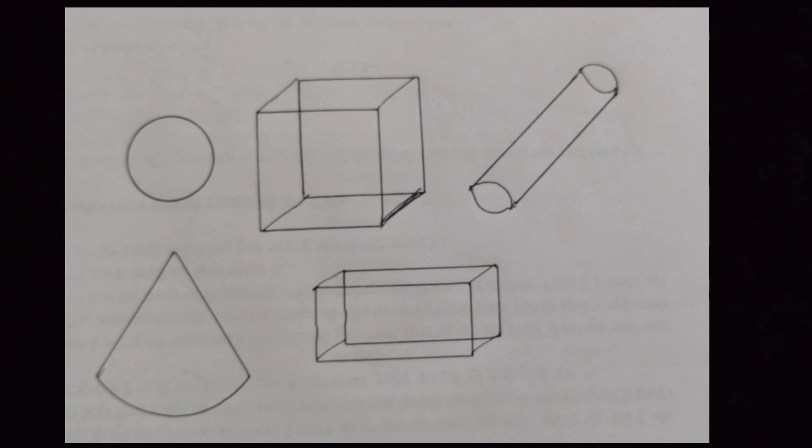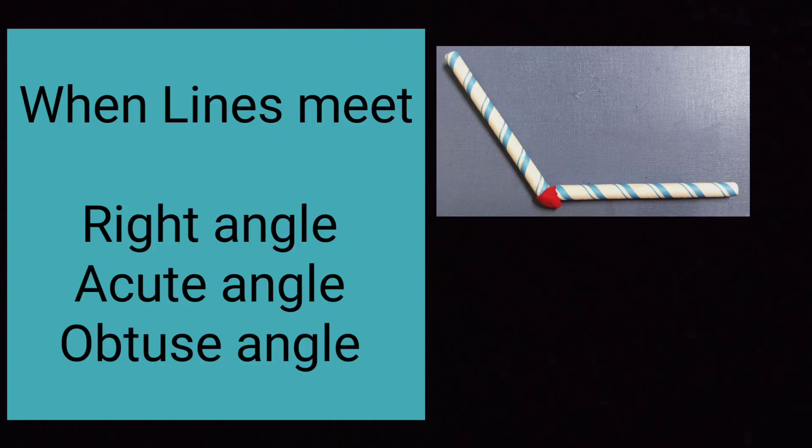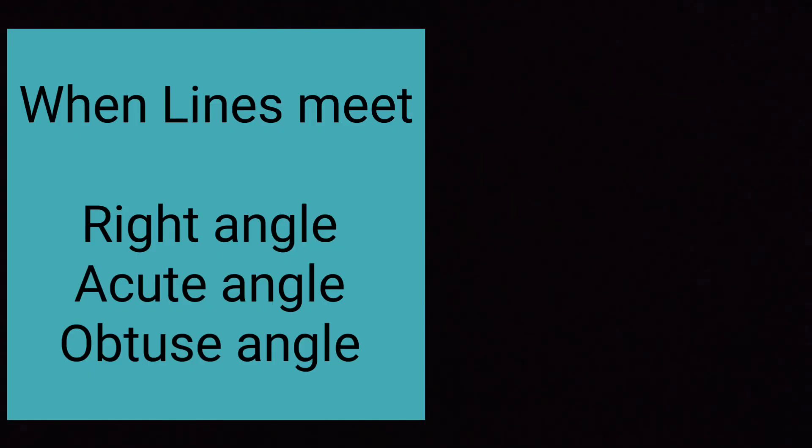The next topic is when lines meet. Under this topic, you will learn about the different angles. Right angle, acute angle and obtuse angle. These are the three angles that you are going to learn. Use activities to learn this. Use two straws to make angle. Also, some yoga postures are given. You should be able to find out the angles.